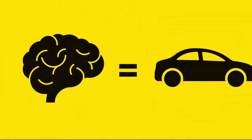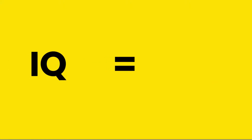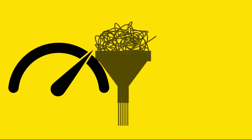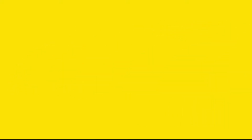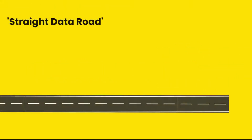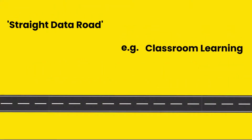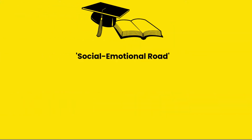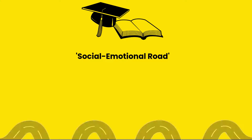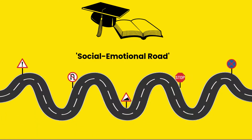Let's imagine your brain is a car. Your IQ can be thought of as the car's engine, determining how fast you can travel or process information. Students with a high IQ can travel fast, provided the data road is straight, like in a predictable learning environment. However, across the day-to-day life of a student, the social-emotional road they travel down is full of bends, signposts and traffic.